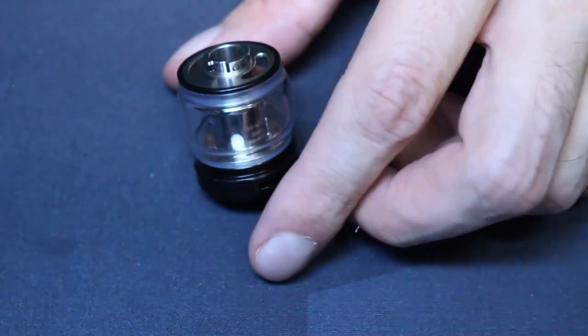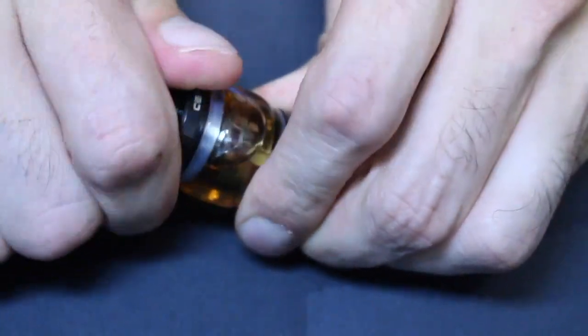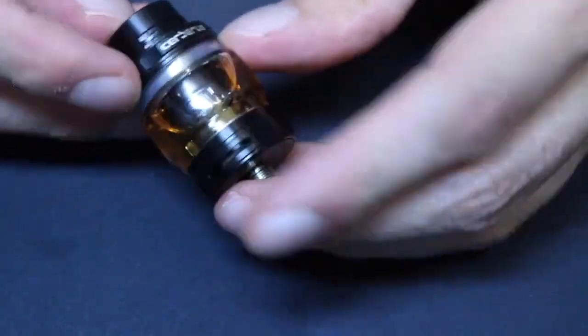Putting the tank together is as easy as any other tank. I found that putting the glass onto the top cap section first works better than putting the glass on the deck first. But other than that, just screw in the coil, put everything back together, and get to vaping.